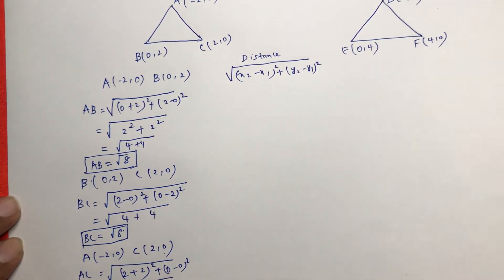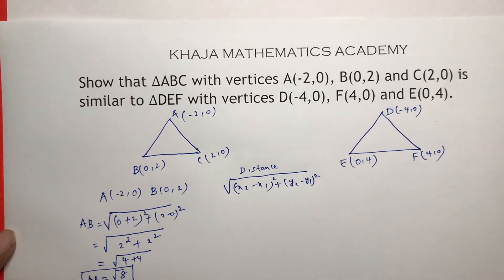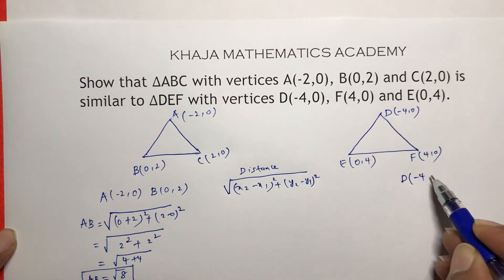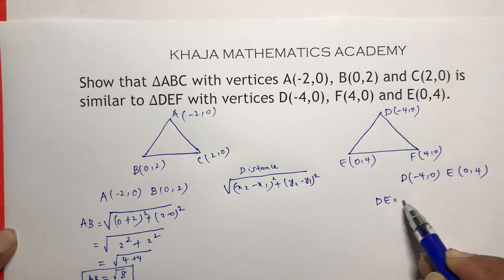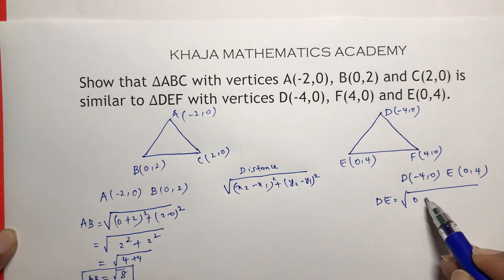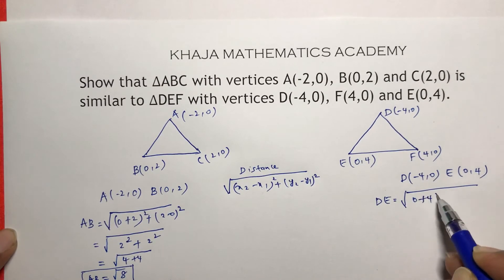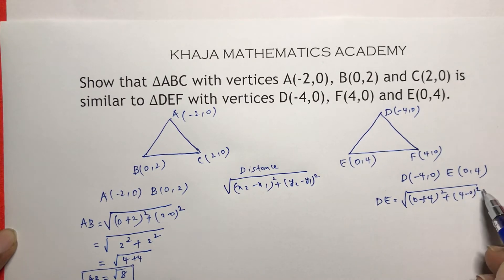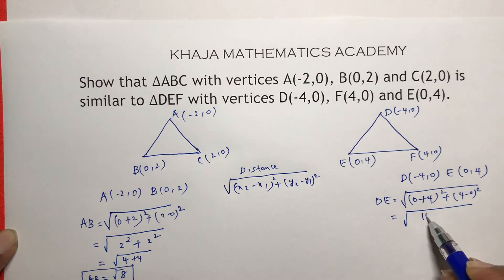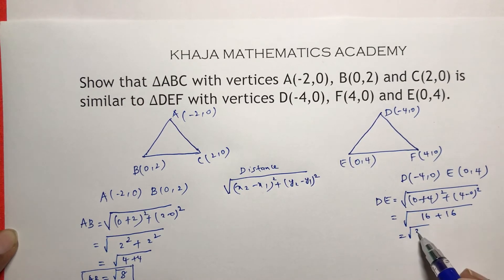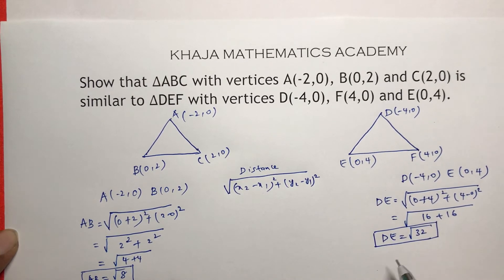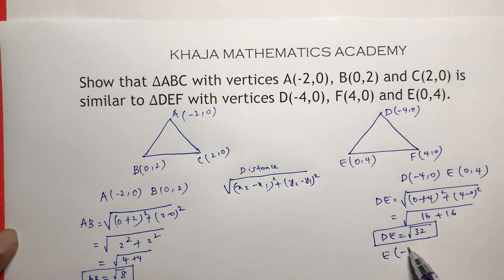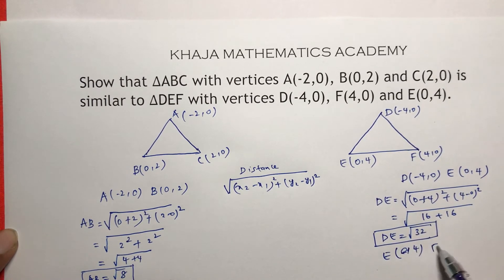Now we will find the distances of the sides of triangle DEF. Taking DE first: D is (-4, 0) and E is (0, 4). The distance DE is under root of (0 plus 4) whole square plus (4 minus 0) whole square, that is 16 plus 16, so DE is root 32.